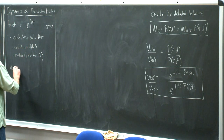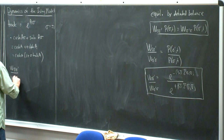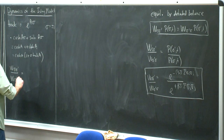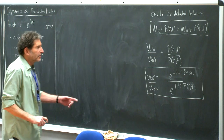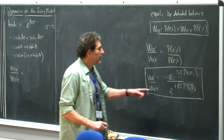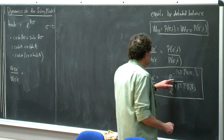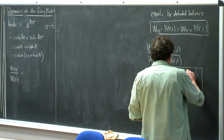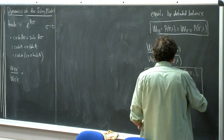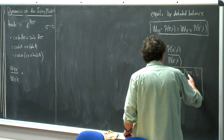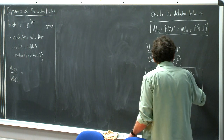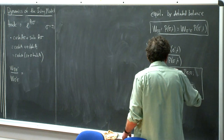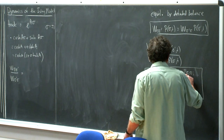Summing over all sites and dividing by N to get the magnetization dynamics: ṁ = -m + tanh(βm). This is the mean-field equation for the evolution of the Ising model — a simple first-order ODE in m.